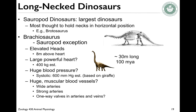It's also interesting to consider long-necked dinosaurs. The sauropods were the largest dinosaurs that ever lived, and most are thought to have held their necks in a horizontal position — which makes sense because it would be easier to get blood to the brain if the head wasn't held high. But Brachiosaurus is thought to be a sauropod exception: it elevated its head about 8 meters above the heart. It's estimated to have had a heart of about 400 kilograms, a systolic pressure of 600 millimeters of mercury, and huge, wide, strong muscular blood vessels — maybe with one-way valves in the arteries as well as the veins.